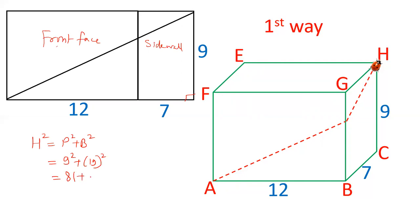81 plus 361. That gives us 442. And H is under root 442, which is approximately 21.01. So this length is 21.01.